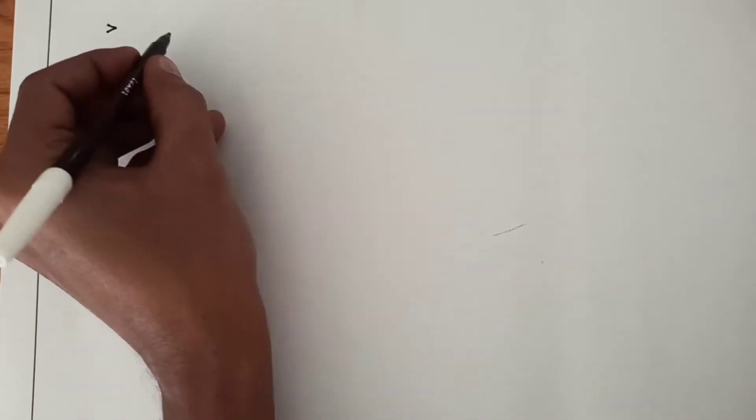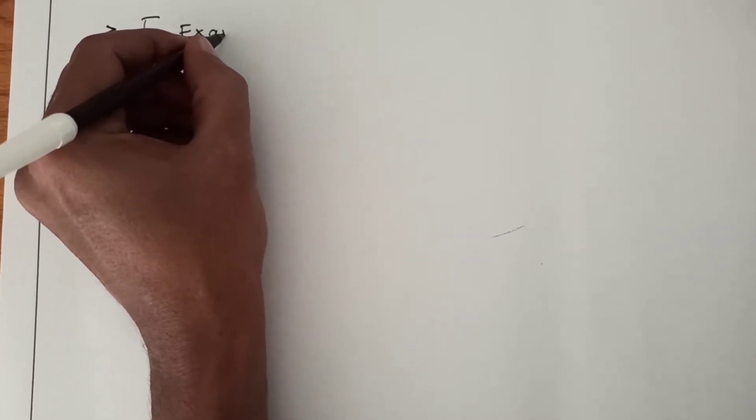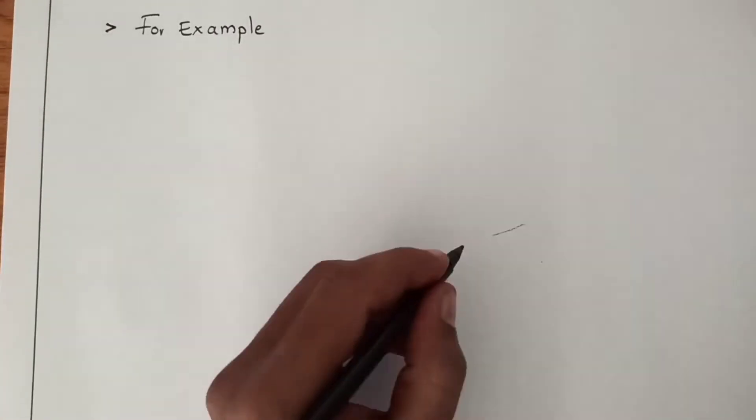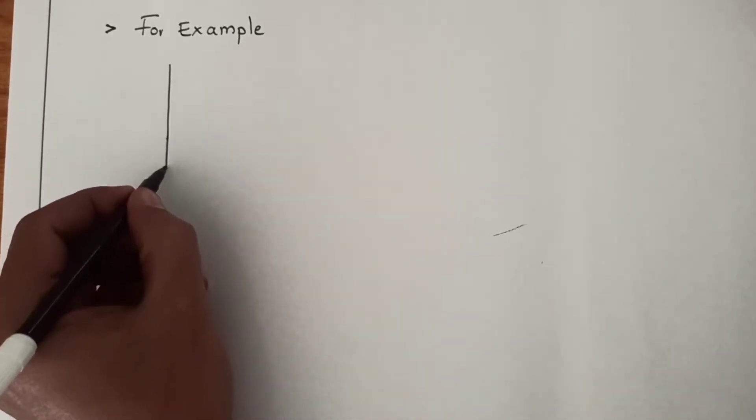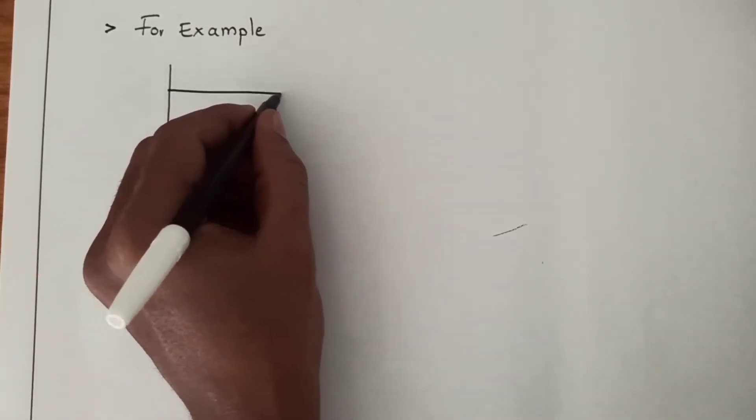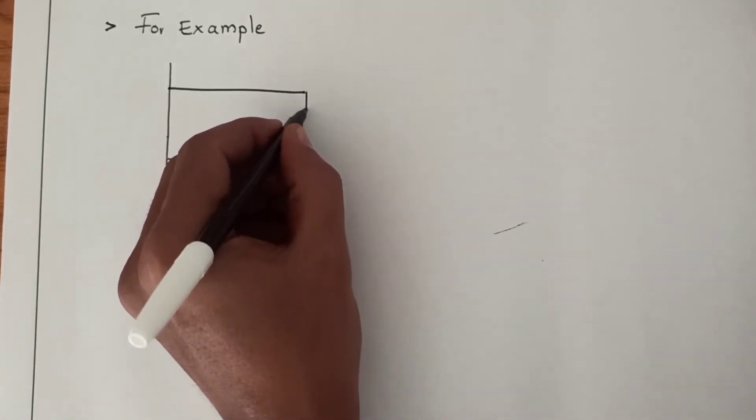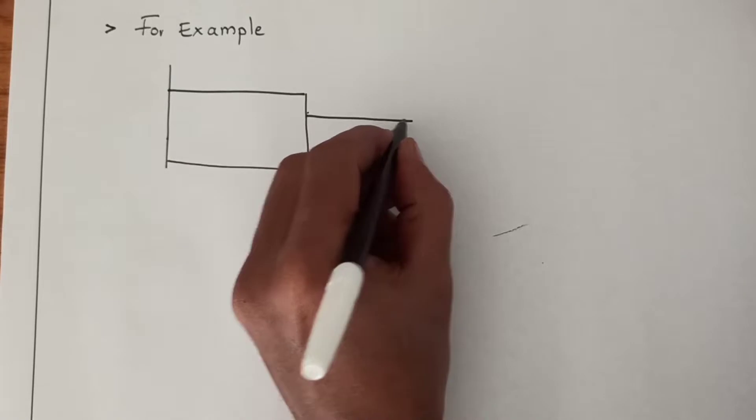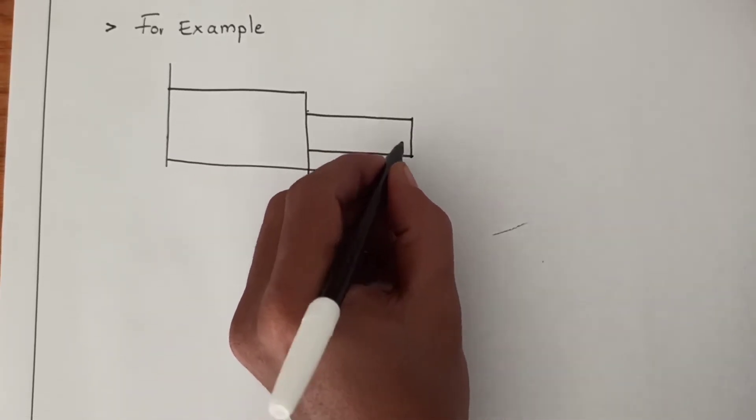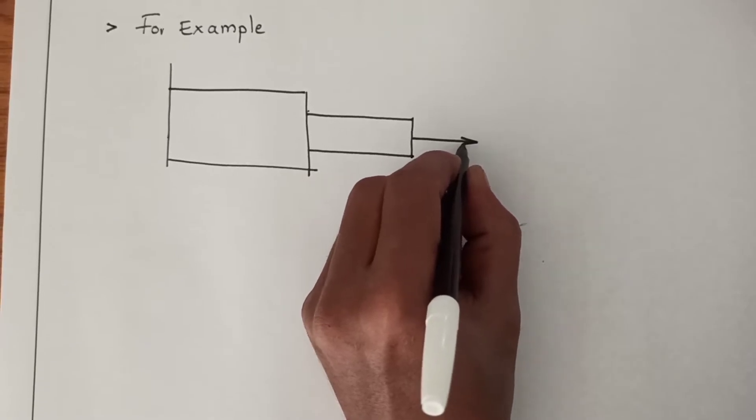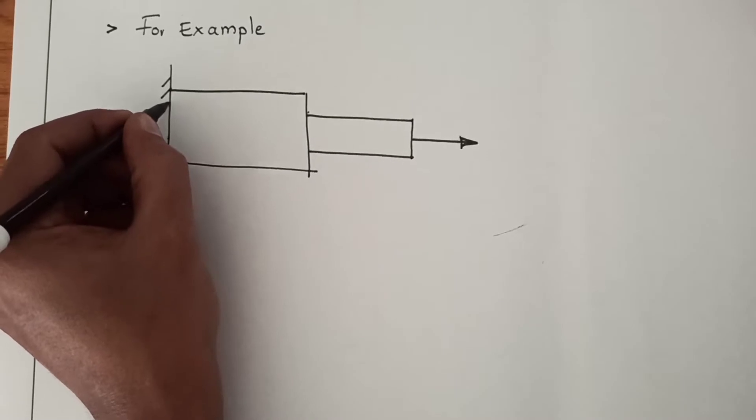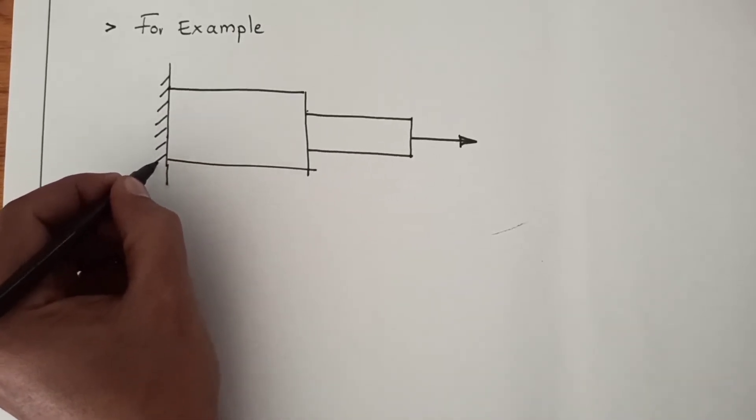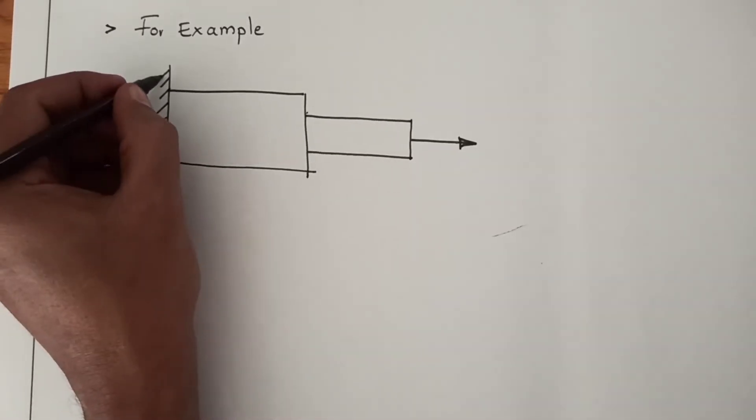Now for example we will take one bar element, a stepped bar, and we will try to explain the fundamental of dividing the element and representing the nodes. So this type of problem you will be easily identifying in FEM.